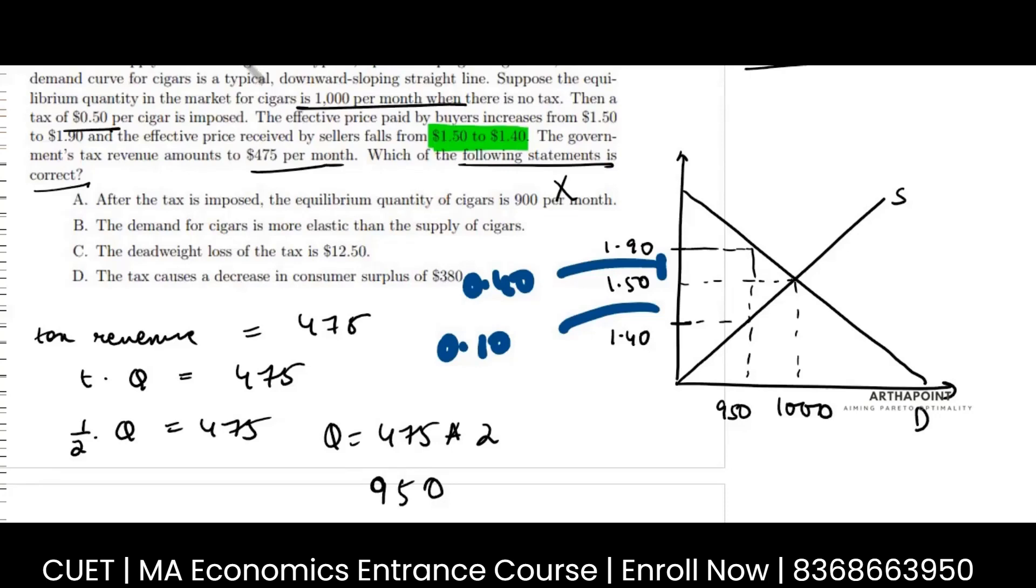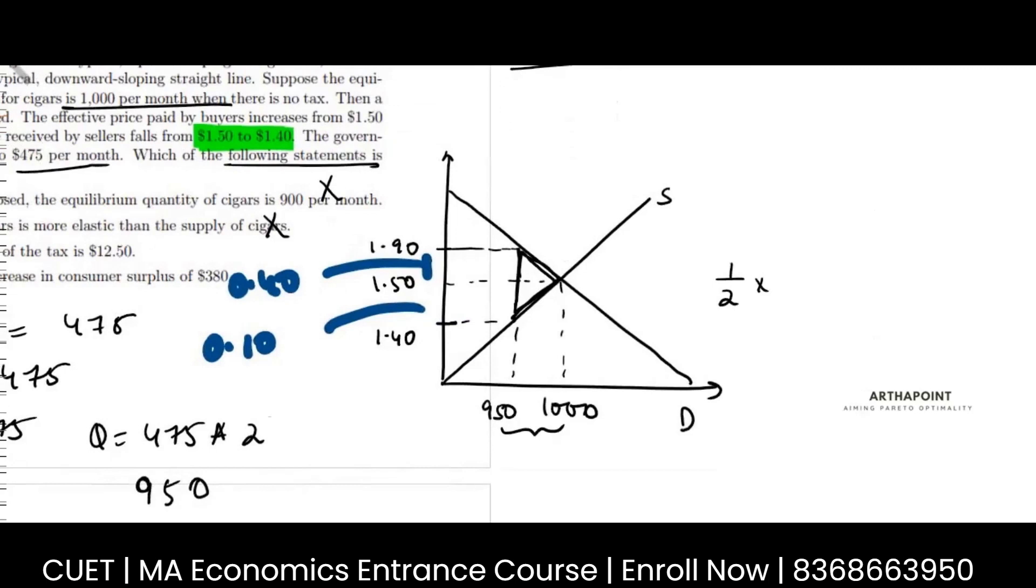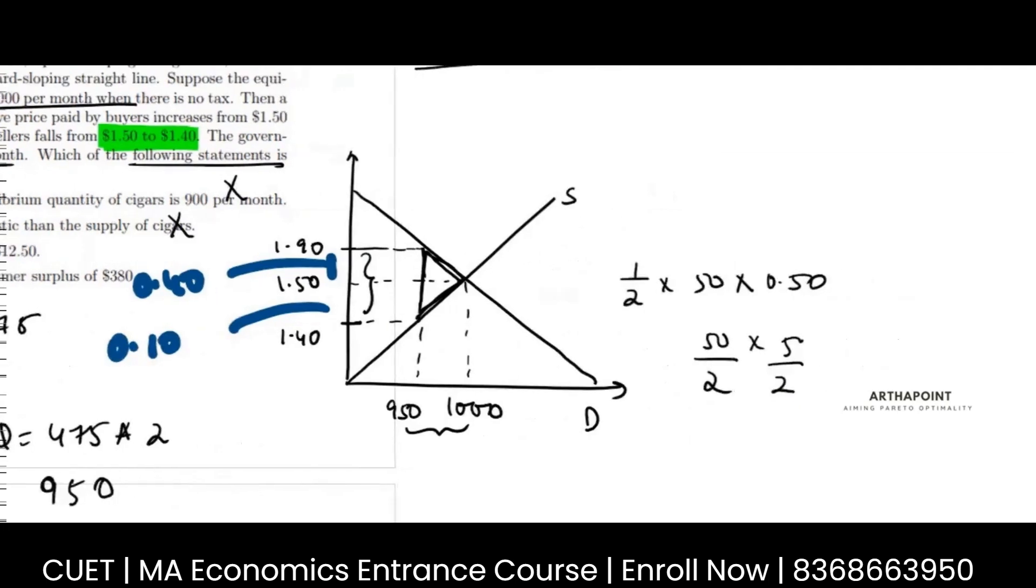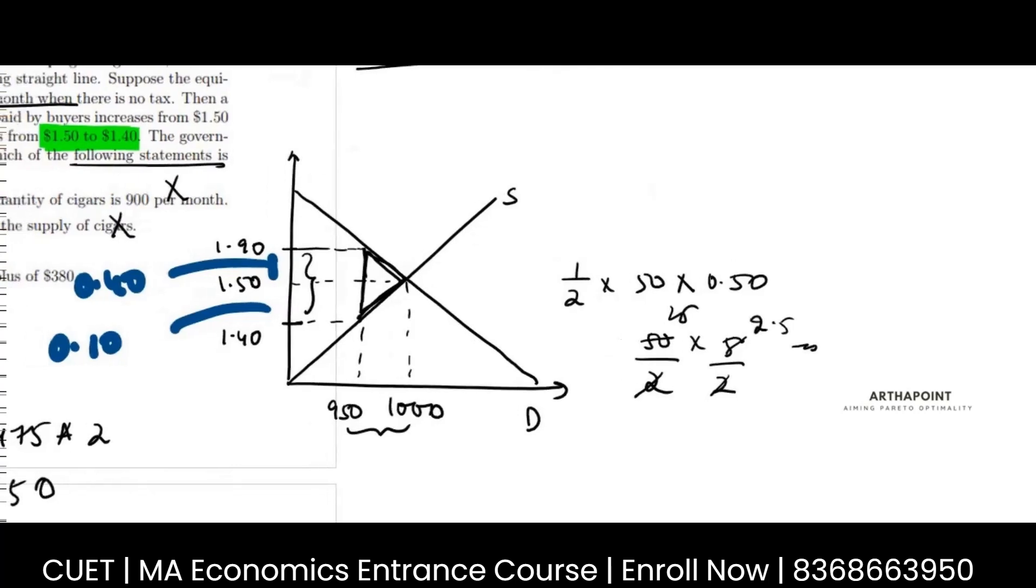So this is incorrect. Deadweight loss is 12.50. So deadweight loss is this triangle. It will be half into base - the basis is 50 - into height, height is 0.50. So this will be 50 into 5 by 2 by 2. So just solve this and you will get this.